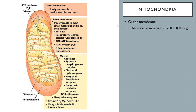The outer membrane has large holes in it that allow molecules all the way up to 5,000 Daltons to go in and out. Water can go in and out, and ions are free to go in and out. So effectively, the space underneath the outer membrane — the fluid there — is basically the same as the cytosol. Between the two layers you have this intermembrane space, and because the outer membrane has these big holes that let pretty much everything through, you have fluid that's basically the same as the cytosol.